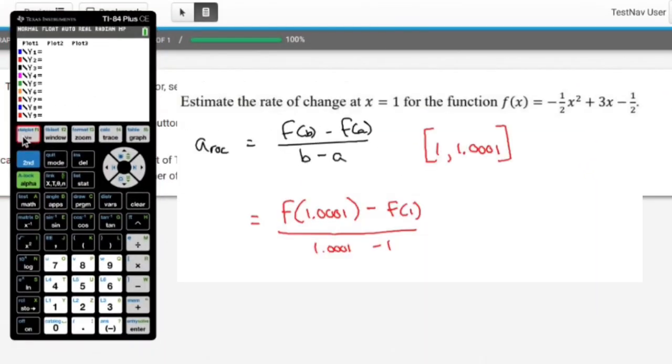All right, so the way we're going to handle this is we're going to type in our function right into here. We're going to type out negative 1 half, so negative 1 divided by 2. You could do 0.5 if you want. Really, it makes no difference. Negative 1 half x squared plus 3x minus 1 half. So I'll do 0.5 because fractions make me nervous.